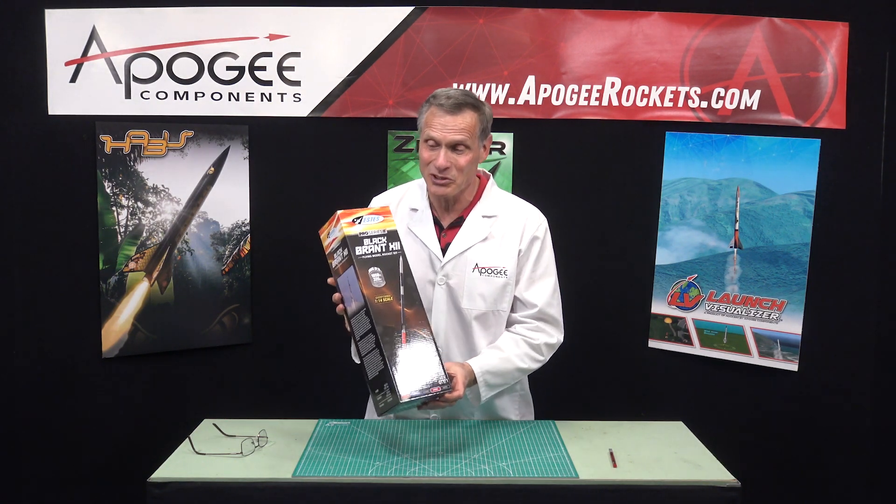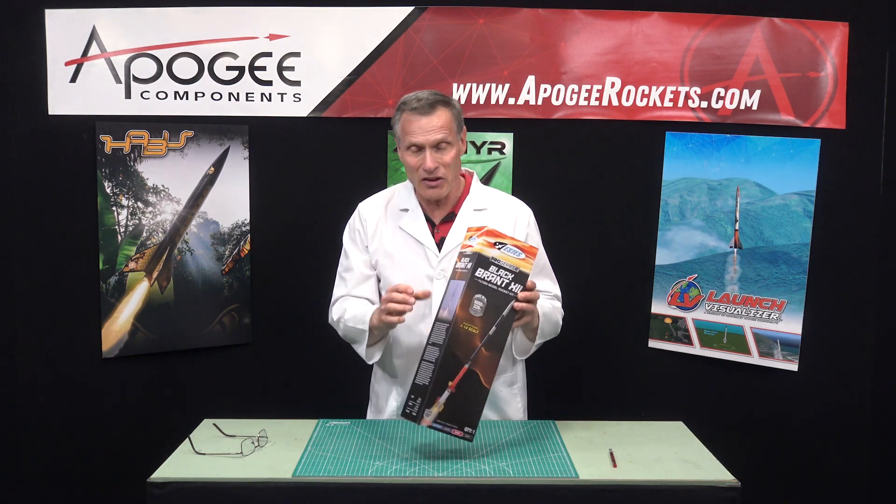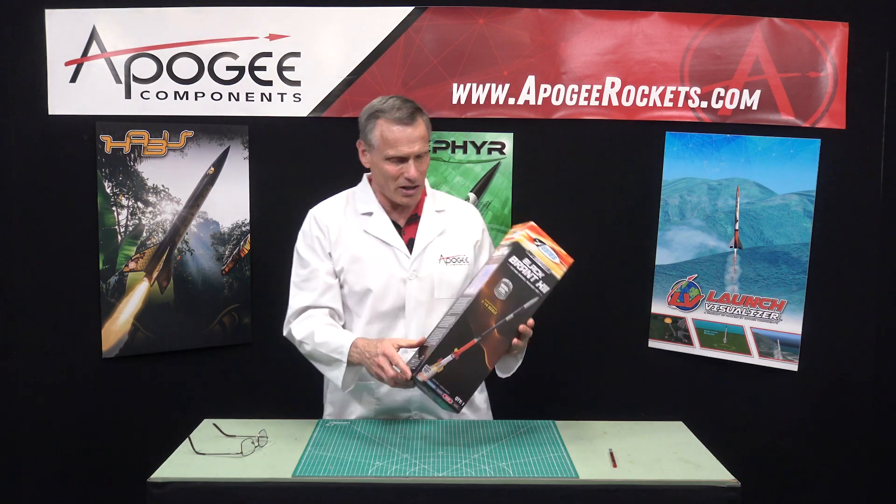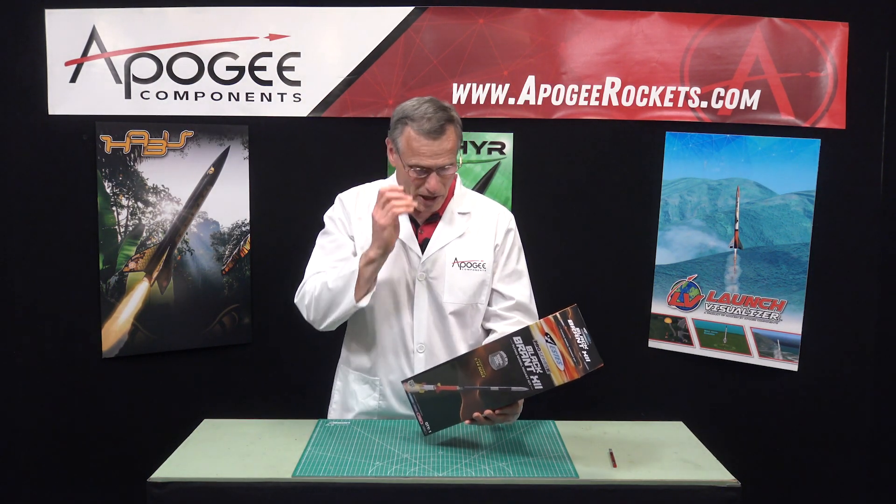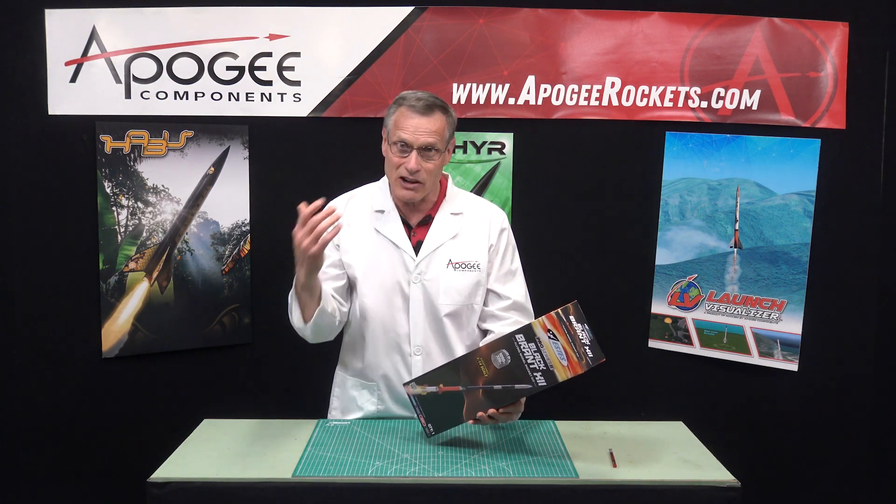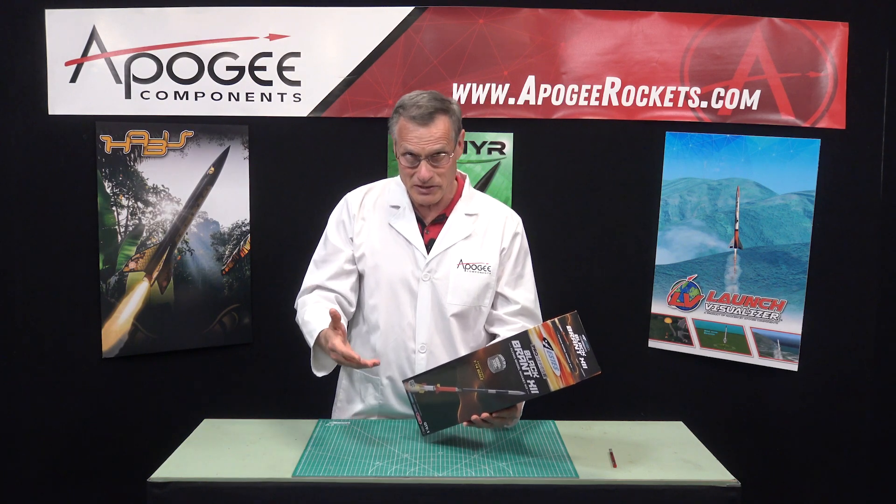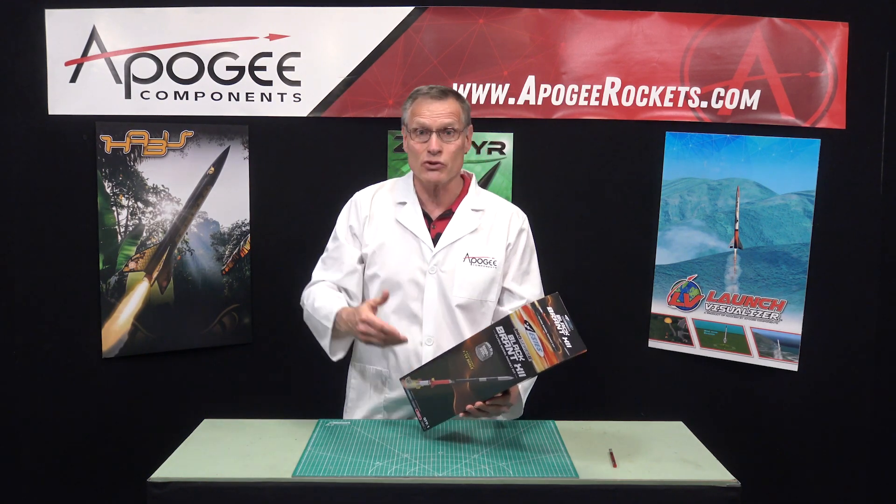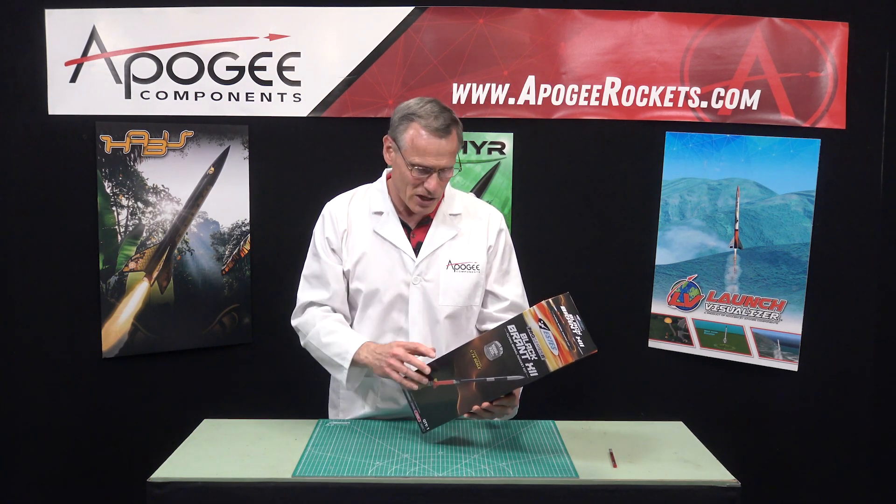Today, we're going to unbox the Estes Black Brandt rocket kit, and this is a scale model. I'm looking on the side of the box for information about the Black Brandt, and basically, it's a sounding rocket used by NASA. Sounding rocket means it's a real rocket, and they use it to measure things in high altitude, and it's a four-stage rocket.